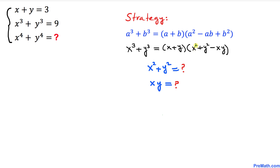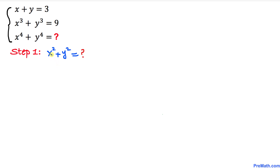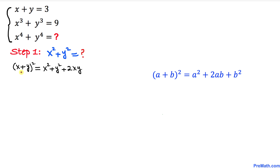Our strategy is to find the value of x squared plus y squared and x times y before finding x to the power 4 plus y to the power 4. Using the formula a plus b squared equals a squared plus 2ab plus b squared, we rearrange to get x squared plus y squared equals x plus y whole squared minus 2xy. We'll call this equation number 1.